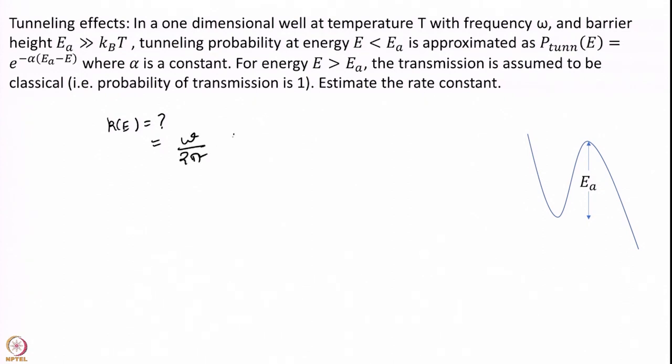For E greater than Ea, the rate is omega over 2 pi. If my energy is above the barrier, the rate is omega over 2 pi, because omega over 2 pi is the frequency of hitting the transition state. In every one time period I will hit the transition state exactly once in the forward direction. This is the transition state approximation — I only look at the rate in the forward direction.